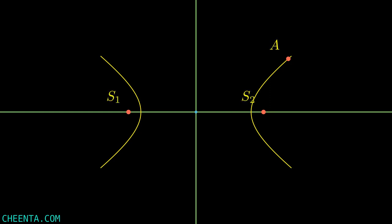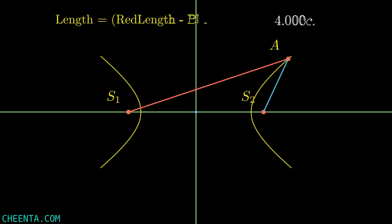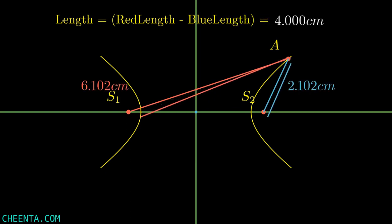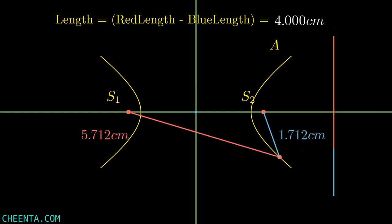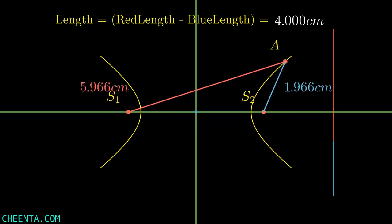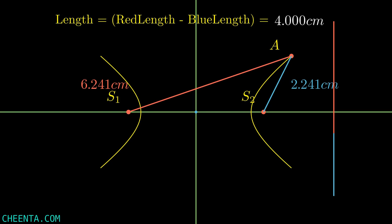Let's join S1A and S2A. The defining property of the hyperbola is that the difference of the red line and the blue line equals some constant, which varies for different hyperbolas. Using a simple visual approach, you will move the red point along the hyperbola, and as you can see the difference is always constant — in this case four centimeters. Using this property you can construct the hyperbola even using a string.